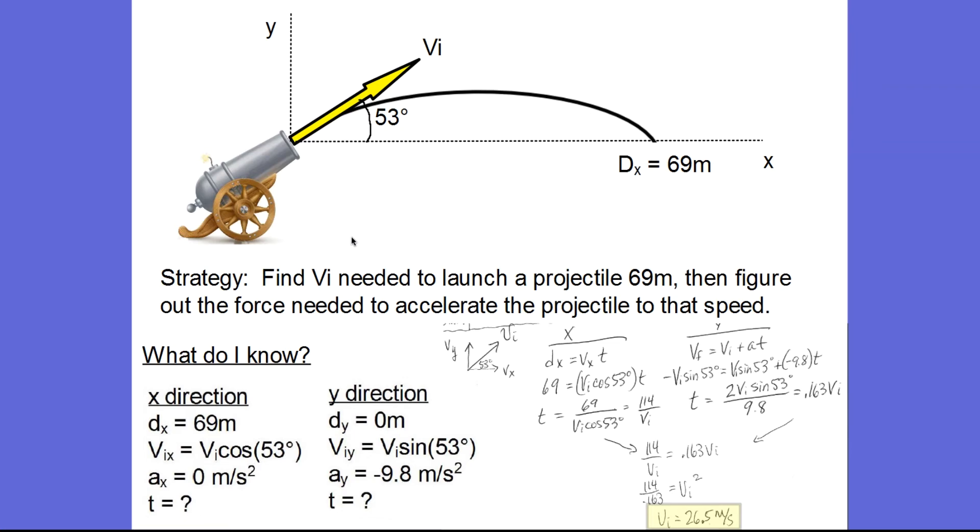Okay, so first we're going to treat it like a projectile problem and working separately in the X and the Y like we usually do for projectile problems. Write down what we know. We know his range or his distance in the X direction is 69 meters. The initial velocity in the X direction is the X component to that velocity calculated right here. We know in the X direction there's zero acceleration and the time is unknown. Then in the Y direction, our displacement in the Y is zero because we end at the same height that we started at. So there's no Y displacement. My Y component of velocity is calculated here and my acceleration in the Y negative 9.8 meters per second squared and my time is unknown.